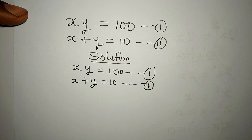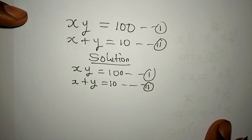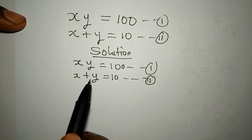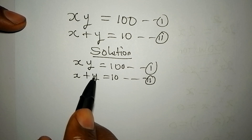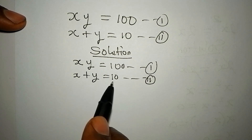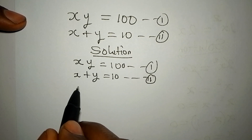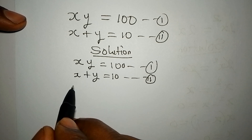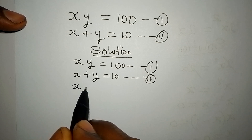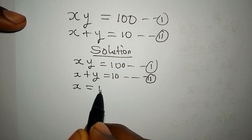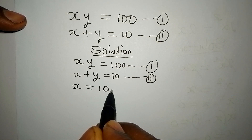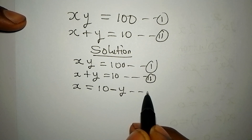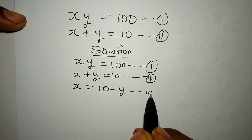What we'll do now is make one of the variables the subject, either from equation 1 or equation 2. From equation 2, x is equal to 10 minus y, and this becomes equation 3.